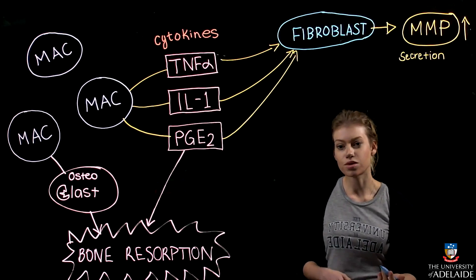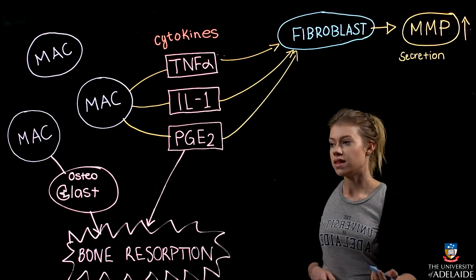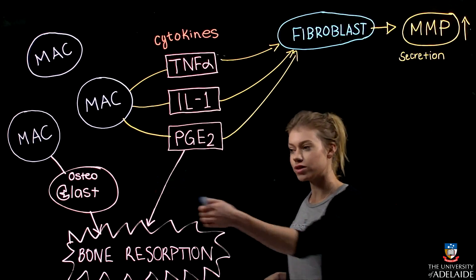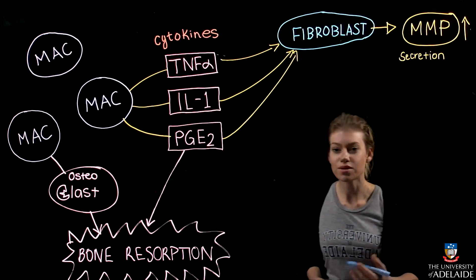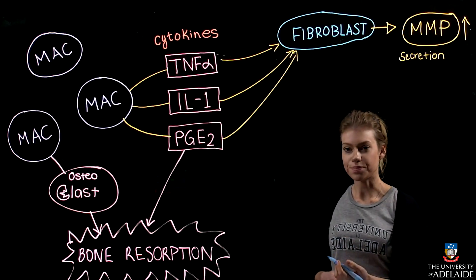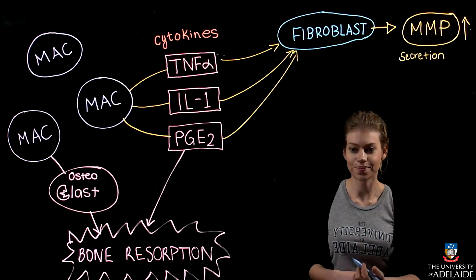Osteoblasts are responsible for building bone — they do the opposite of what osteoclasts do. However, when they secrete RANKL, they contribute to bone resorption. We will explain how this happens soon.